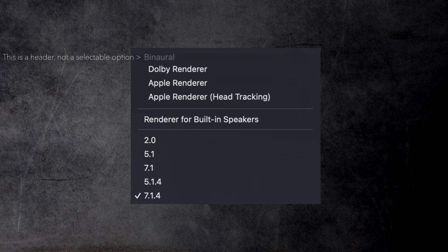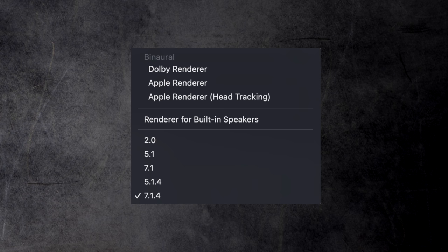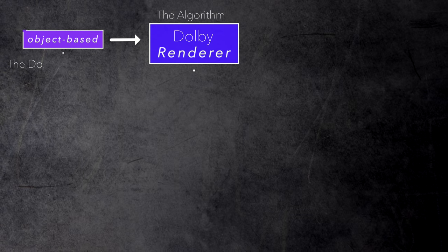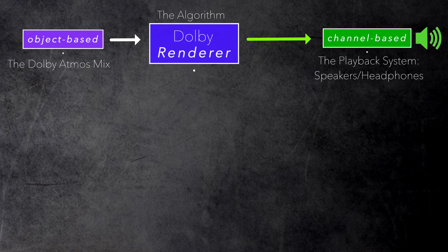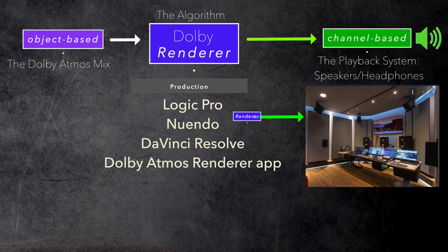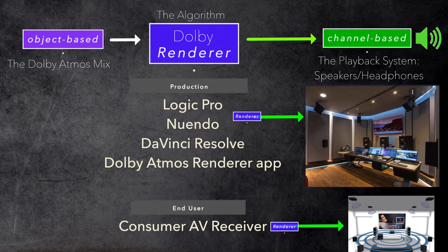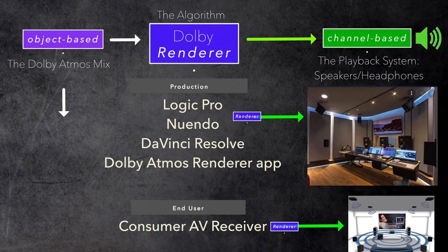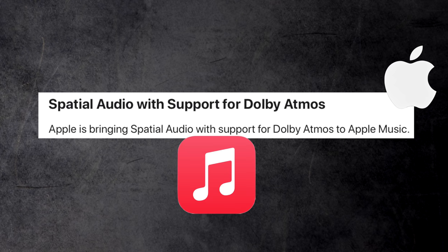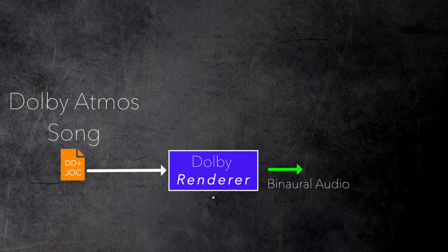There was one big problem regarding the binaural rendering with any Dolby Atmos mixing solution, not only Logic. The renderer as the heart of a Dolby Atmos system is built into Logic Pro and any other Dolby Atmos mixing software, and that same renderer is also built into any consumer device capable of playing back Dolby Atmos content. However, when Apple introduced Dolby Atmos support for Apple Music in May 2021, they decided not to use the Dolby renderer when converting a Dolby Atmos song to a binaural signal when played over headphones.